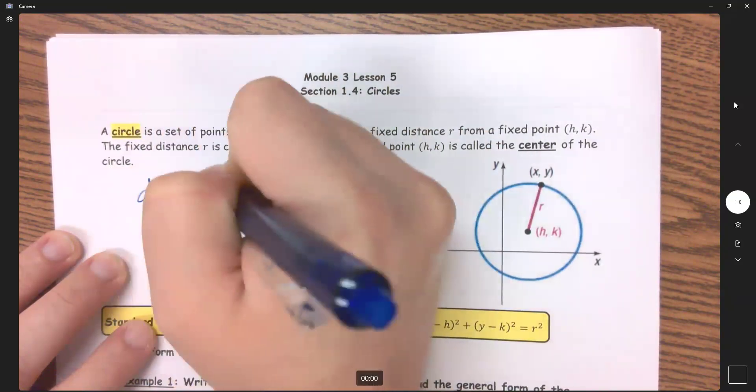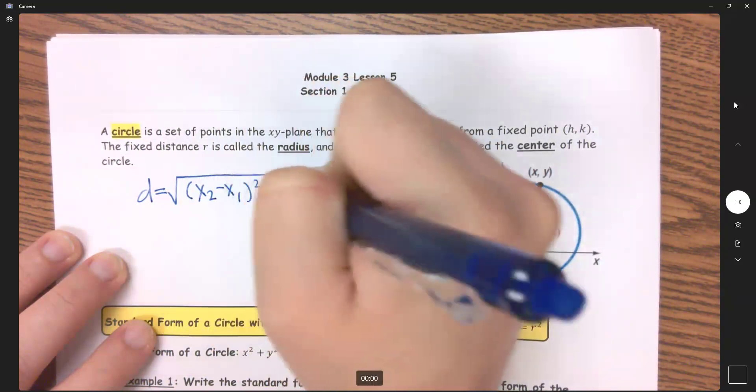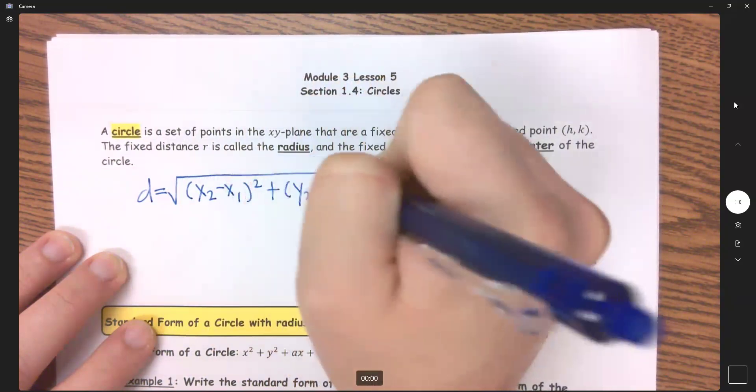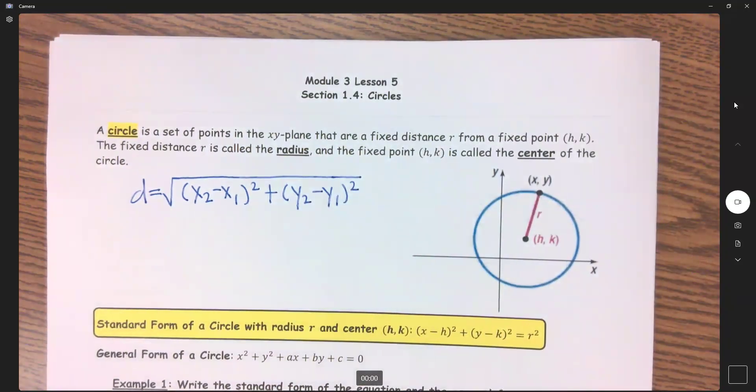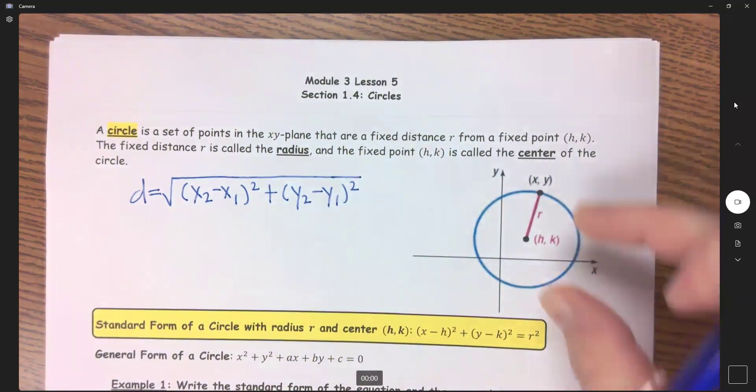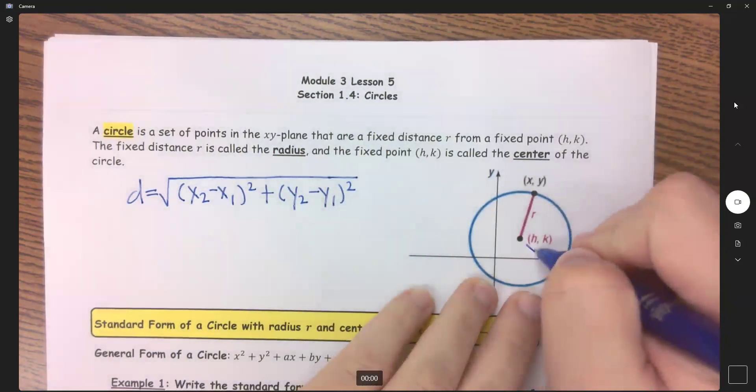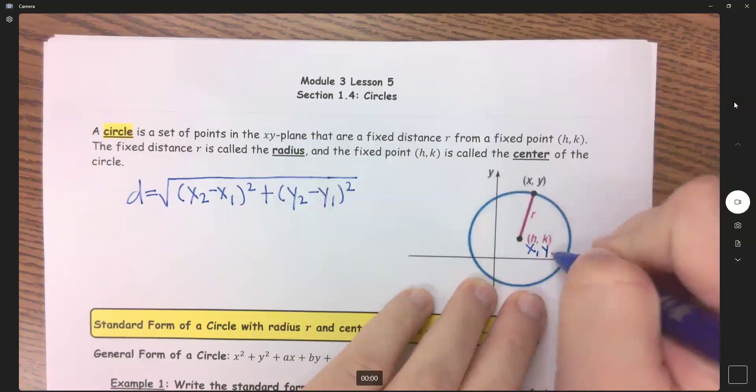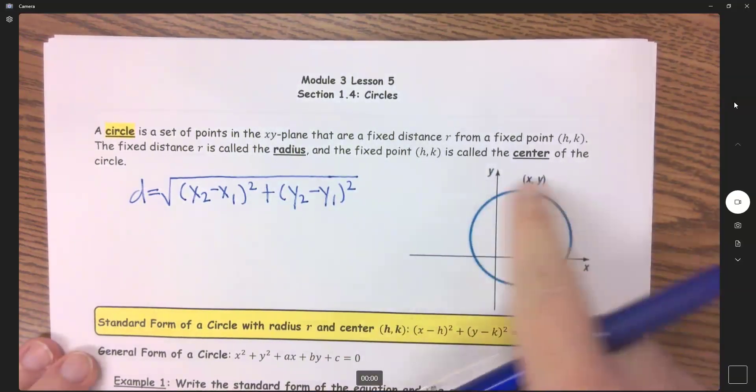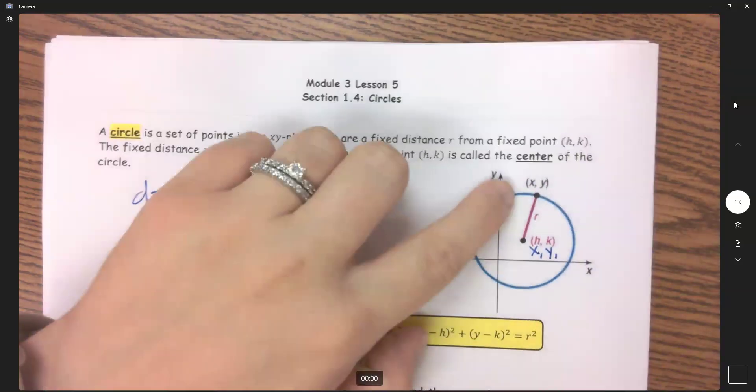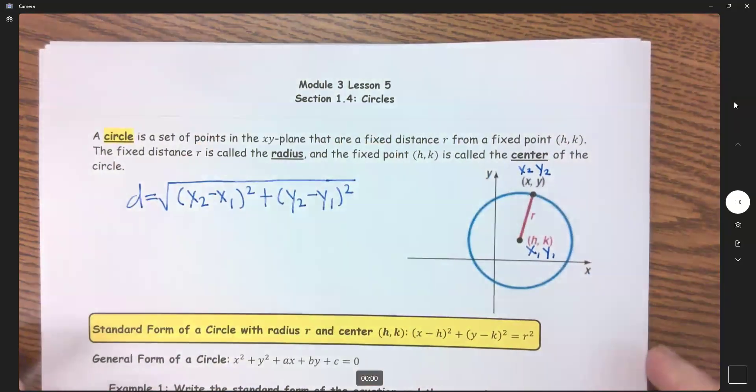Which is the square root of (x2 minus x1) squared plus (y2 minus y1) squared. And if I'm wanting to find the distance of this radius here, I'm going to call this center point 1. So this is my x1, y1.